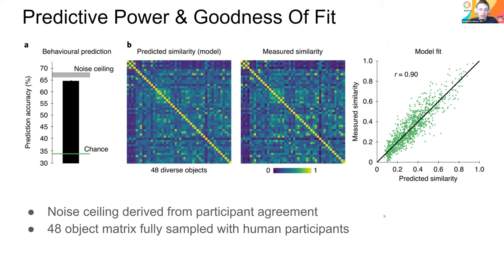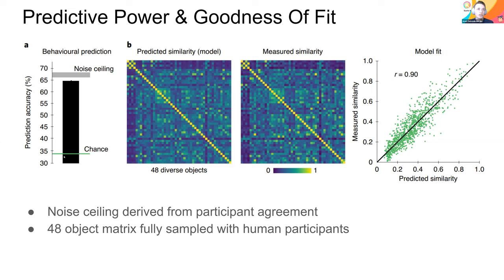Before looking at whether the dimensions are interpretable, they validated whether their model was working properly. They couldn't directly check the full model against all billion possible predictions, so they took a subset of 48 objects and ran another online experiment where they exhaustively sampled all similarity relationships. They checked for inter-participant agreement, finding the noise ceiling was about 68% — that was the agreement level between participants, where chance would be 33%.